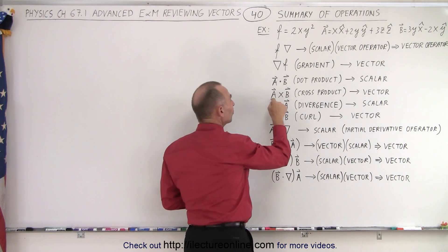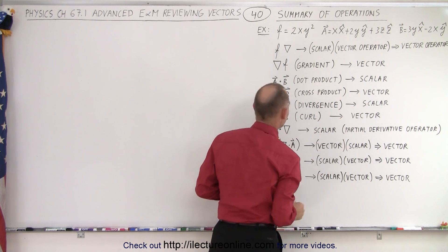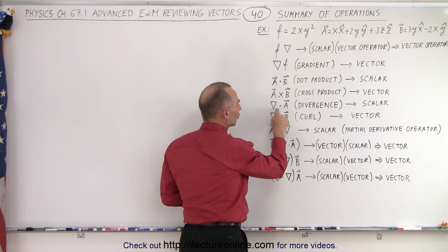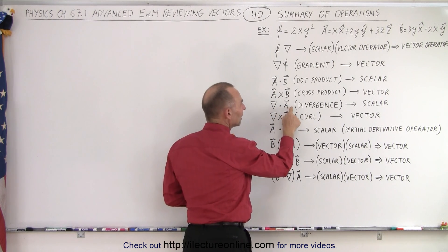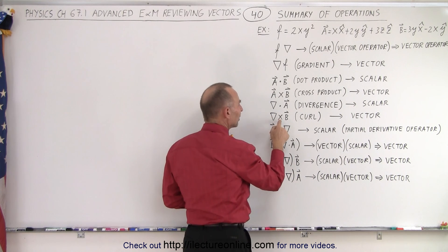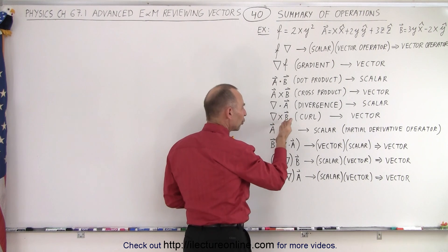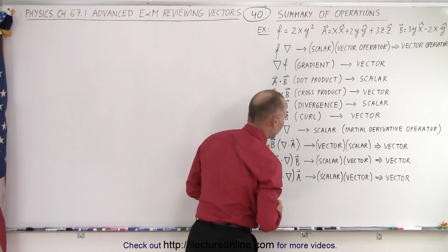But if we do a cross product, a cross b, then we end up with a vector quantity. Then we have what we call the divergence, the divergence which is the del operator operating on a vector that gives us a scalar quantity. And if we use the del operator to multiply via the cross product symbol, that is called the curl, and then we end up with a vector quantity.